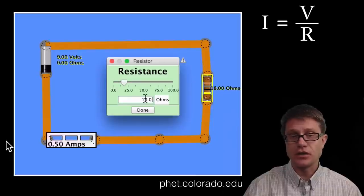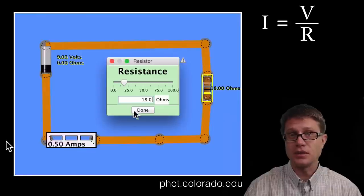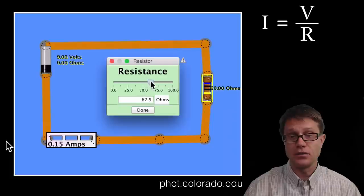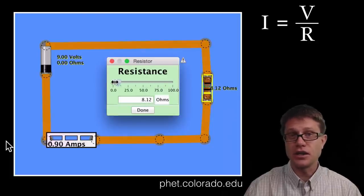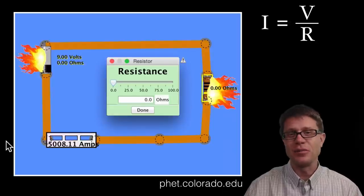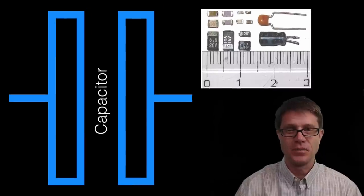Watch what happens when I start to change the ohms. As I increase the resistance, the amps are cut in half. If I increase it again to 27 ohms, I have way less amps — less current is actually making it through. As I change the resistance and make it greater, there are really low amps. As I decrease it we have high amps, to the point where I have really shorted out the battery and we have got a fire going on.